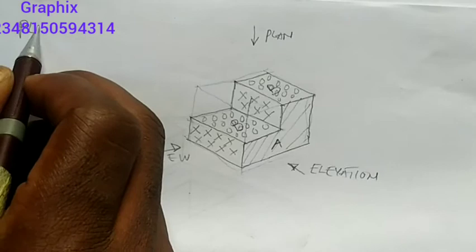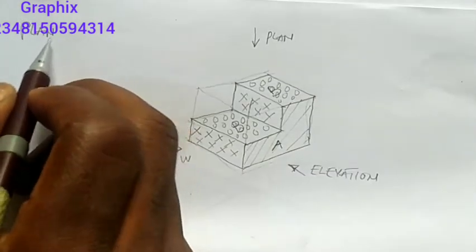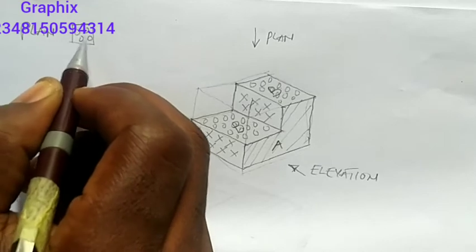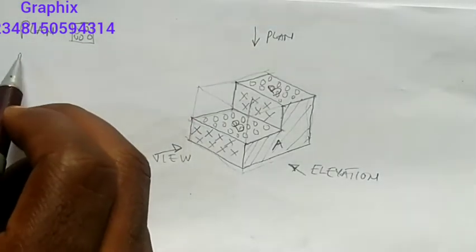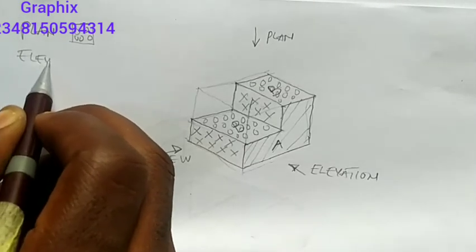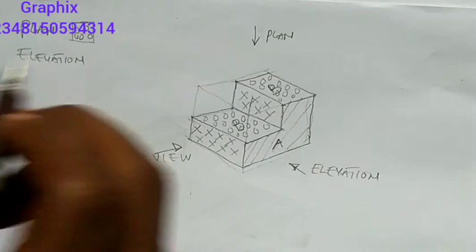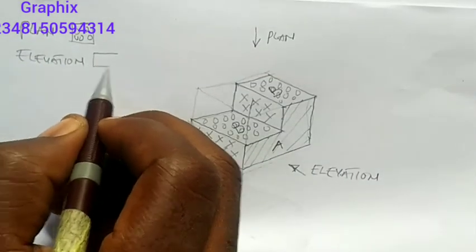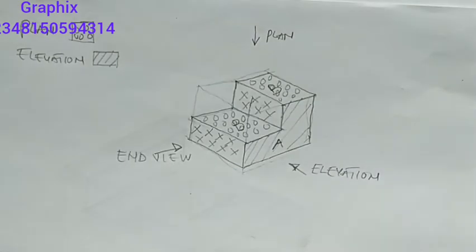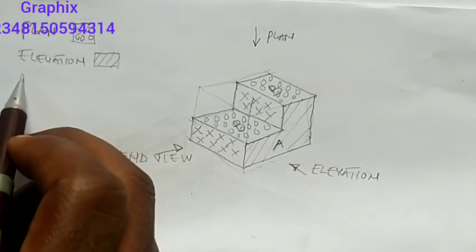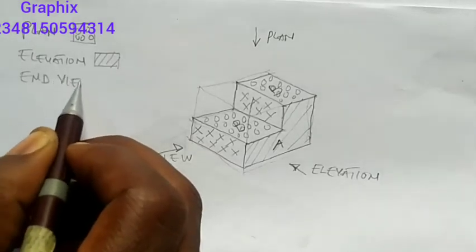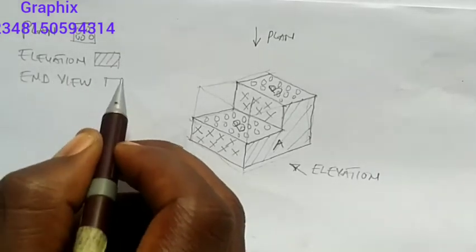We have the plan, which I explain using this symbol — a circle to represent our plan. We have the elevation, represented using the H-line symbol. And we have the end view or end elevation, represented using another symbol.